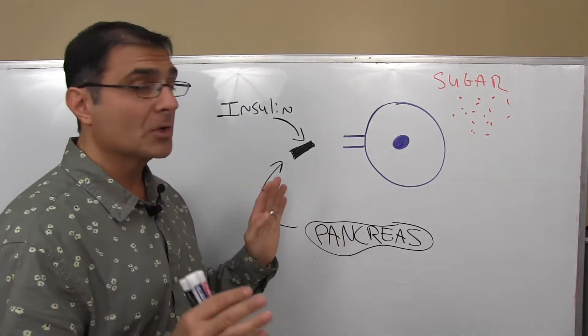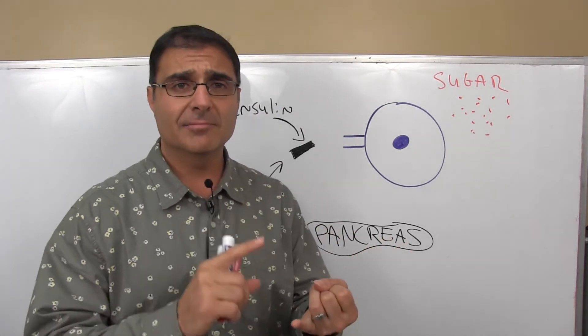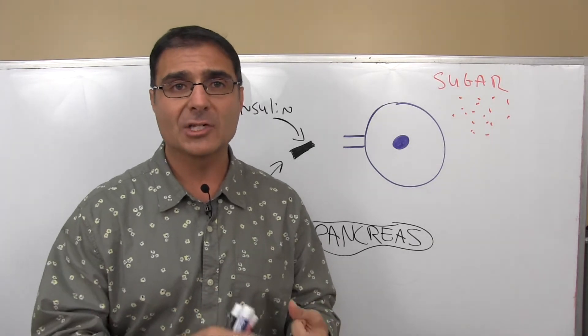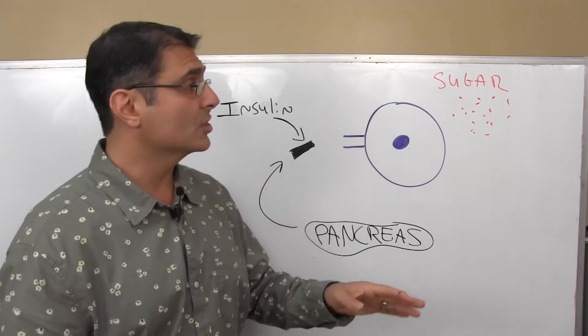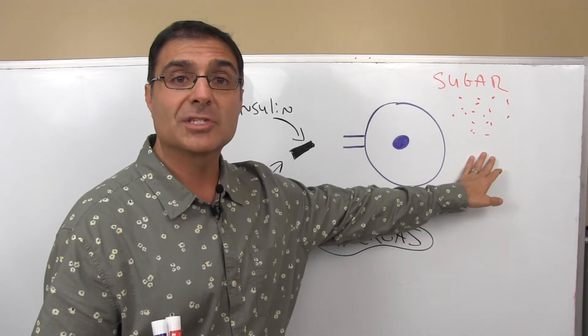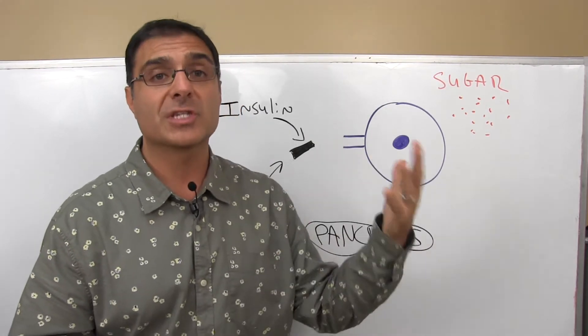So first off, in a healthy person, what's supposed to happen is you eat some pasta, or you eat some type of carbohydrate, fruits, whatever it is, and that raises your blood sugar. So all these little red dots here, that's going to represent your blood sugar. Your blood sugar goes up.